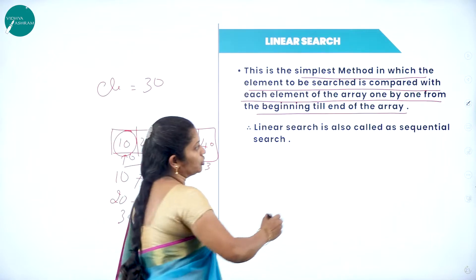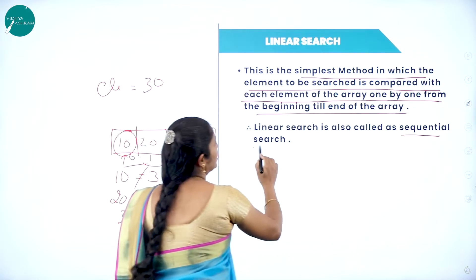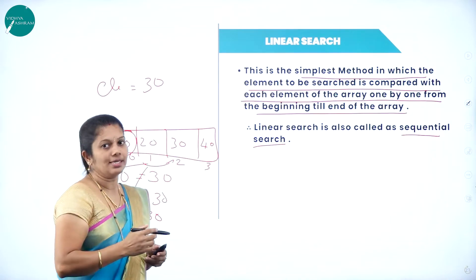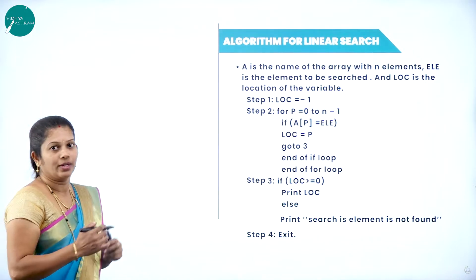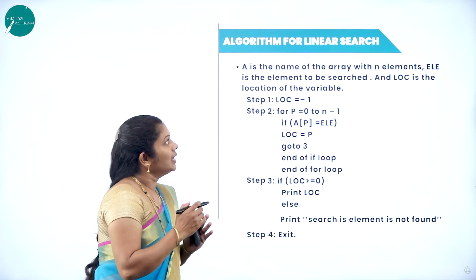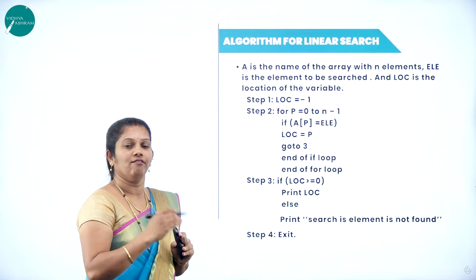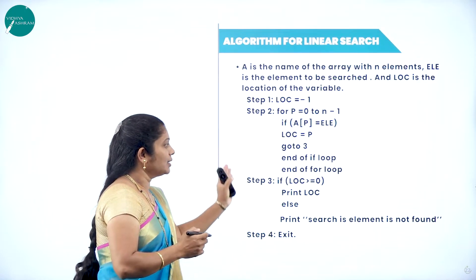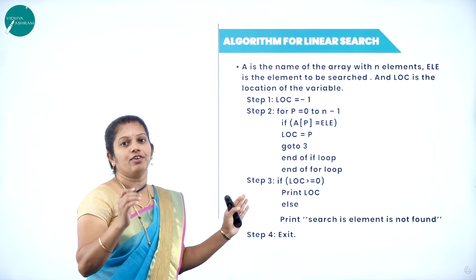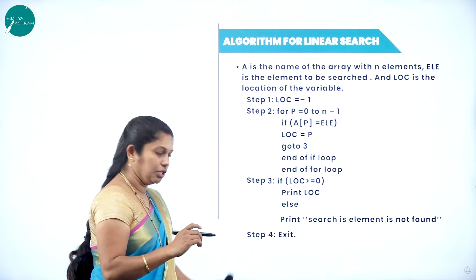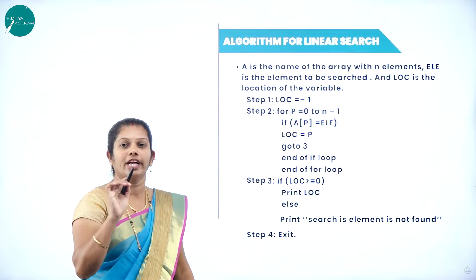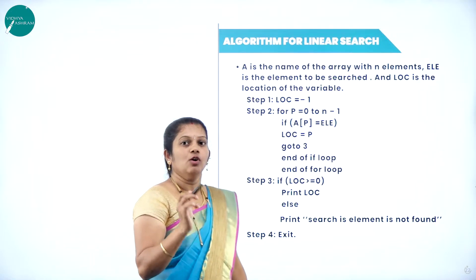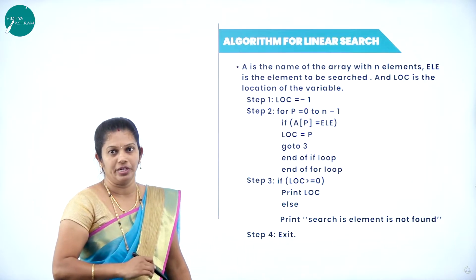Linear search is also called sequential search, because one after another all elements are searched. This type of algorithm will get you five marks in the annual exam — it contains only four steps. Before writing the algorithm, you must also mention which variables you are using.